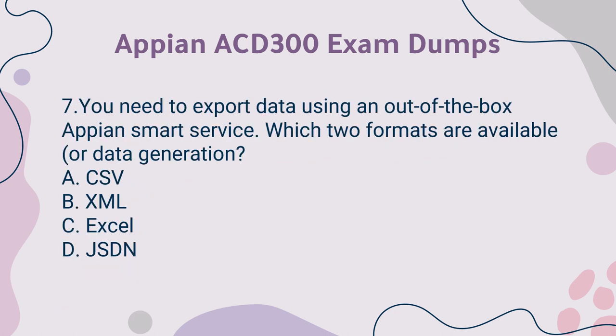Question 7: You need to export data using an out-of-the-box Appian smart service. Which two formats are available for data generation? A. CSV. B. XML. C. Excel. D. JSON.